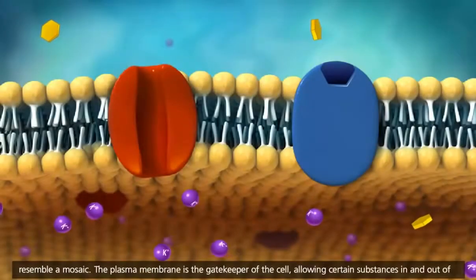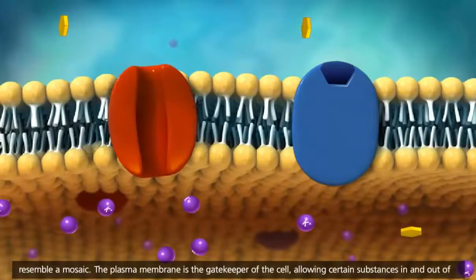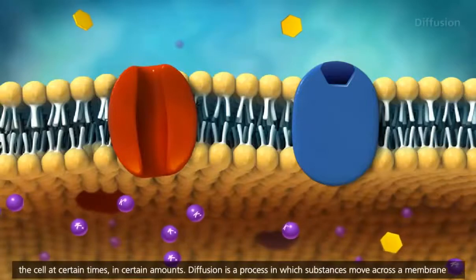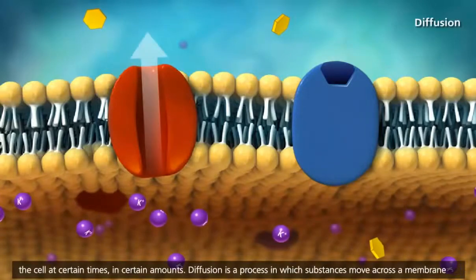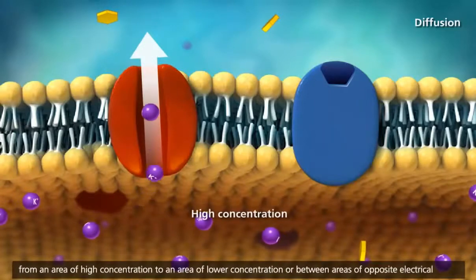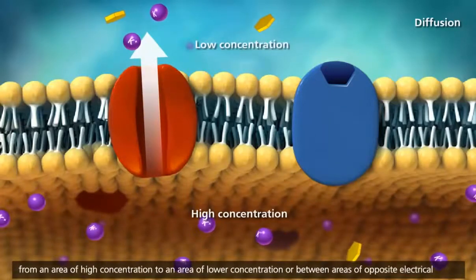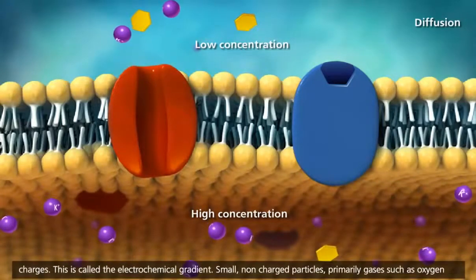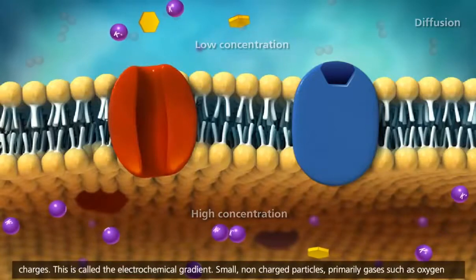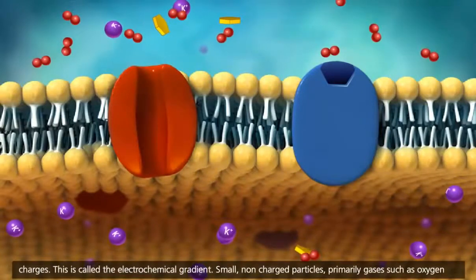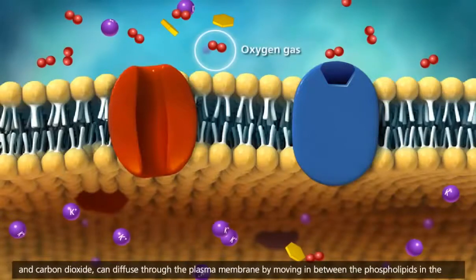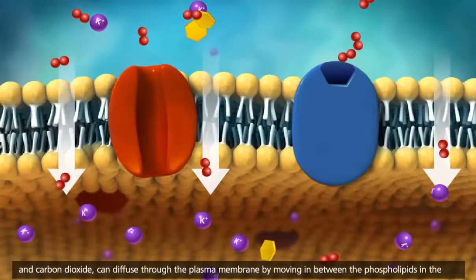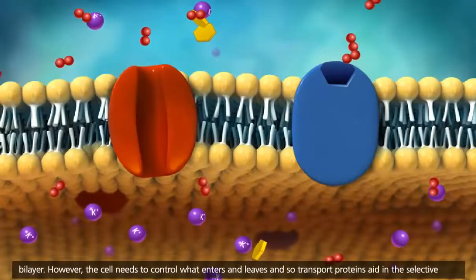The plasma membrane is the gatekeeper of the cell, allowing certain substances in and out of the cell at certain times in certain amounts. Diffusion is a process in which substances move across a membrane from an area of high concentration to an area of lower concentration, or between areas of opposite electrical charges. This is called the electrochemical gradient. Small, non-charged particles, primarily gases such as oxygen and carbon dioxide, can diffuse through the plasma membrane by moving in between the phospholipids in the bilayer.